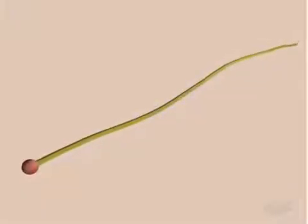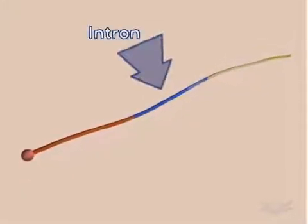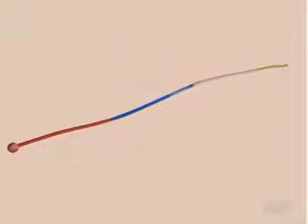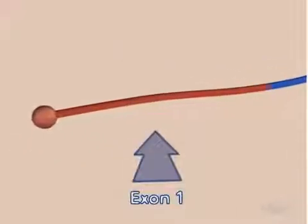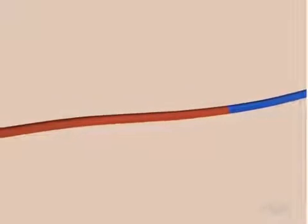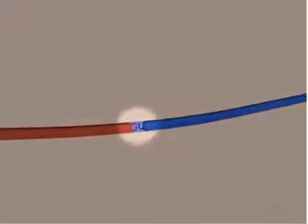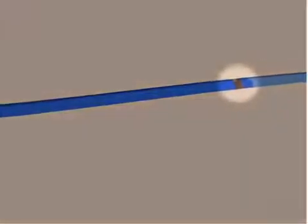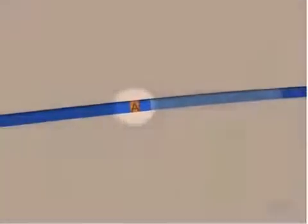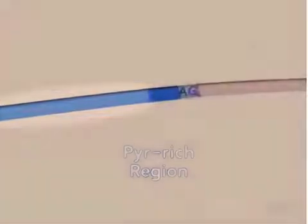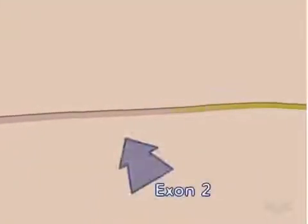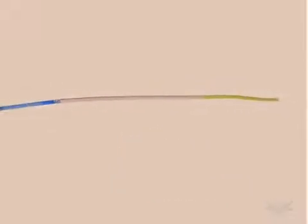Here we see an RNA molecule with a single intron. Several signals exist within the intron that are used in the splicing process. From the 5' end of the intron, these are GU, the A branch site, a pyrimidine-rich region, and the 3' AG. The GU and AG sequences define the beginning and end of the intron.